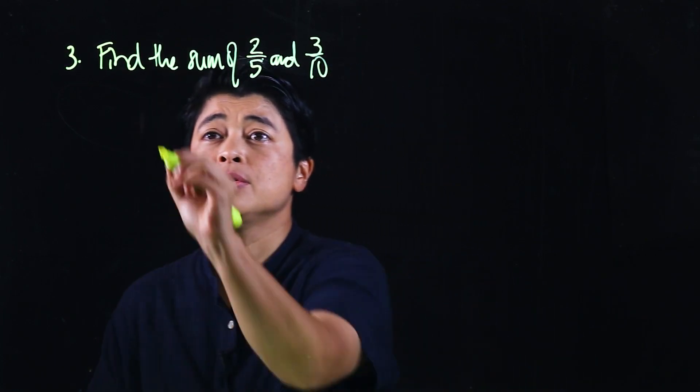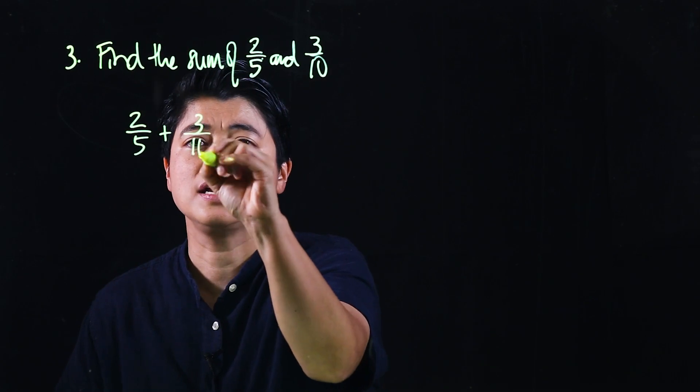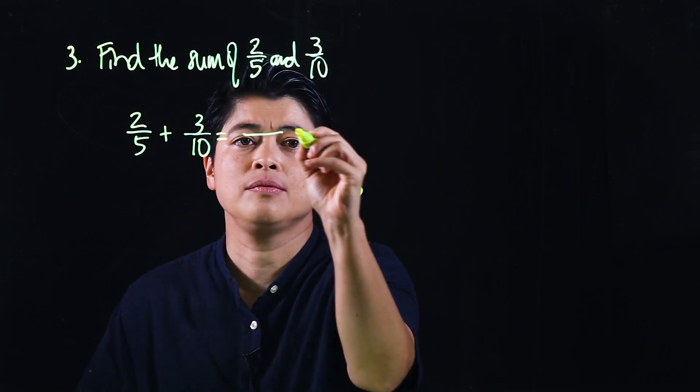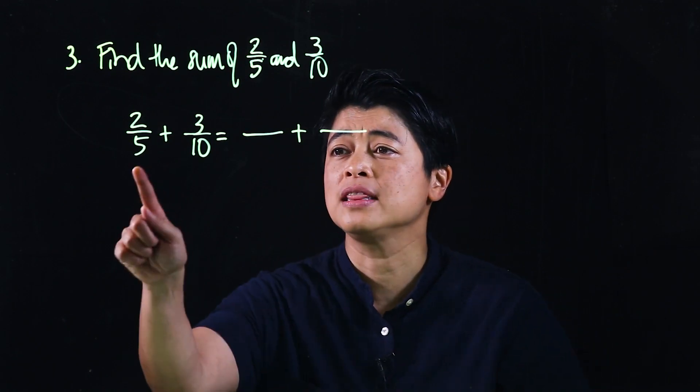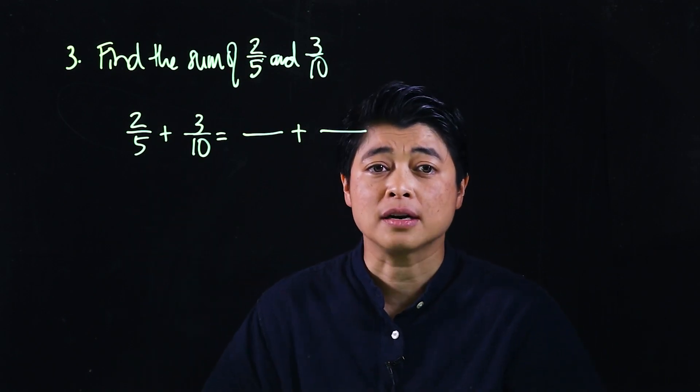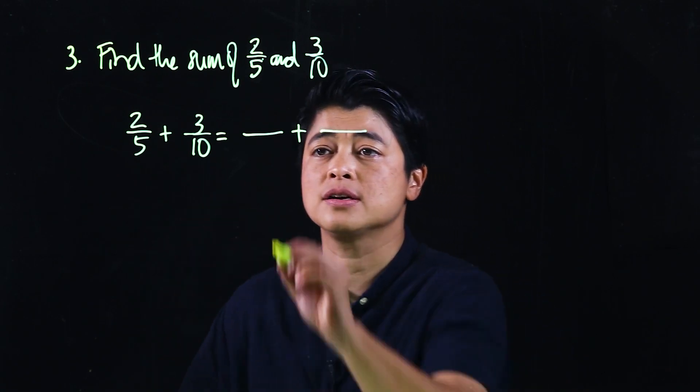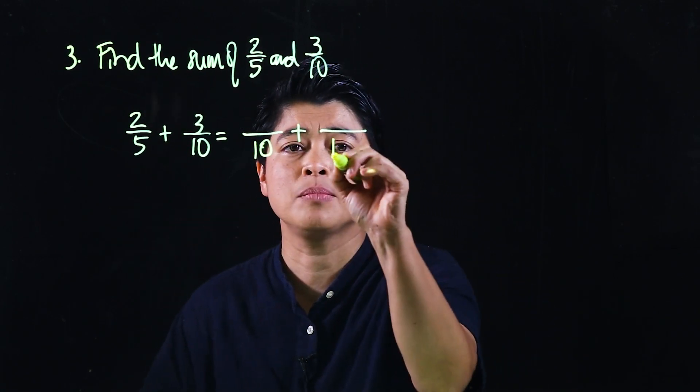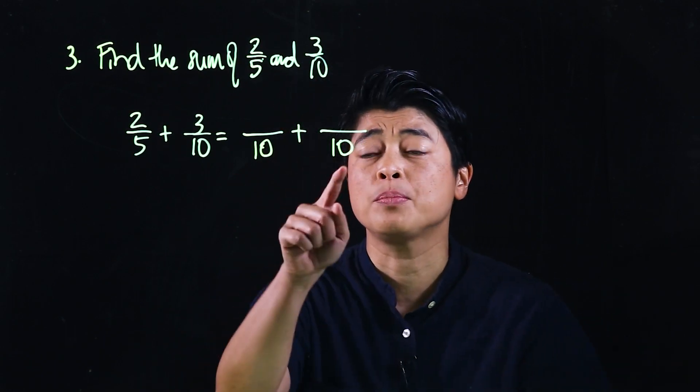We rewrite it as two-fifths plus three-tenths. The first step is to find the common denominator, and what's common here would be ten. So we need to make them both ten.